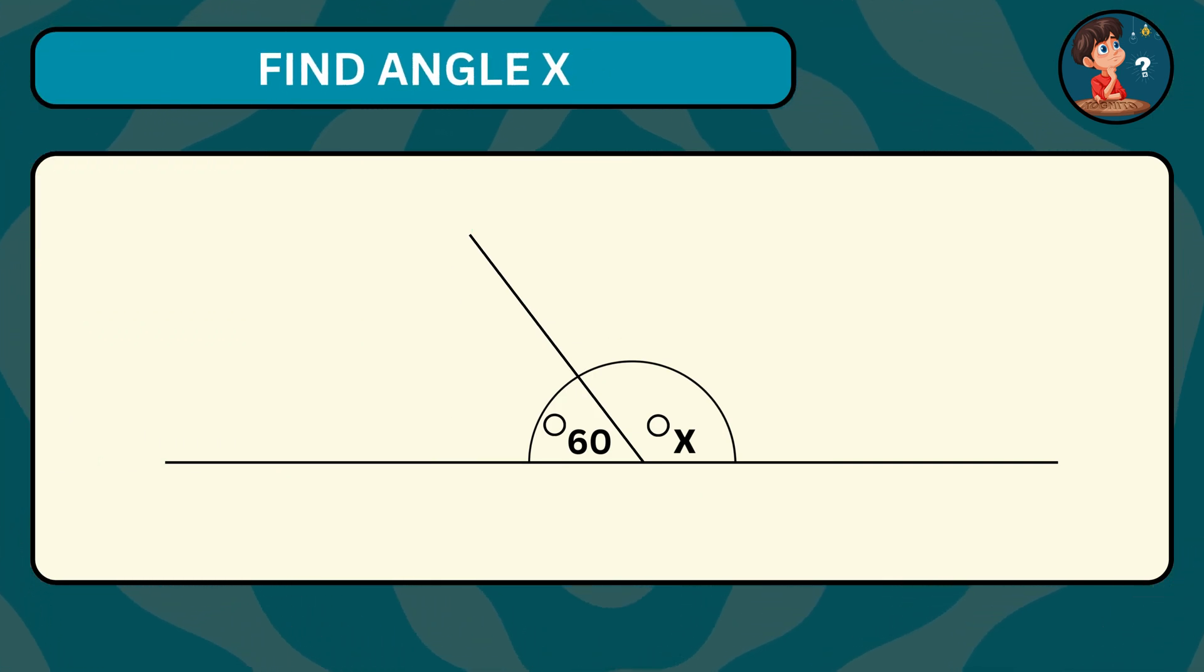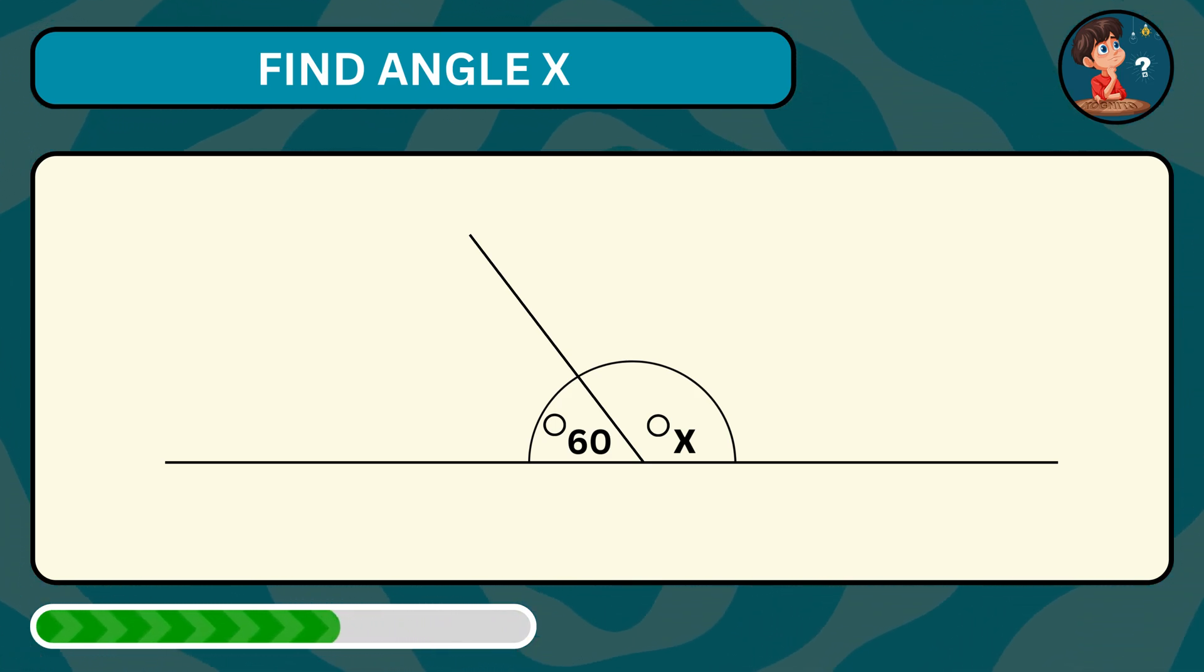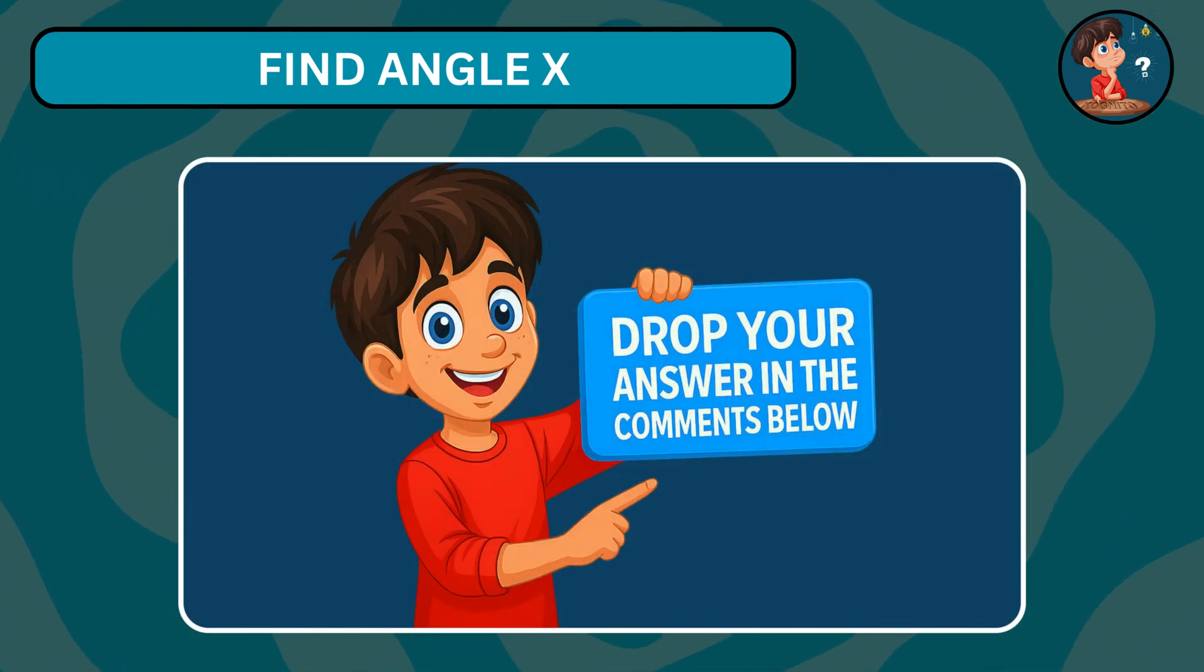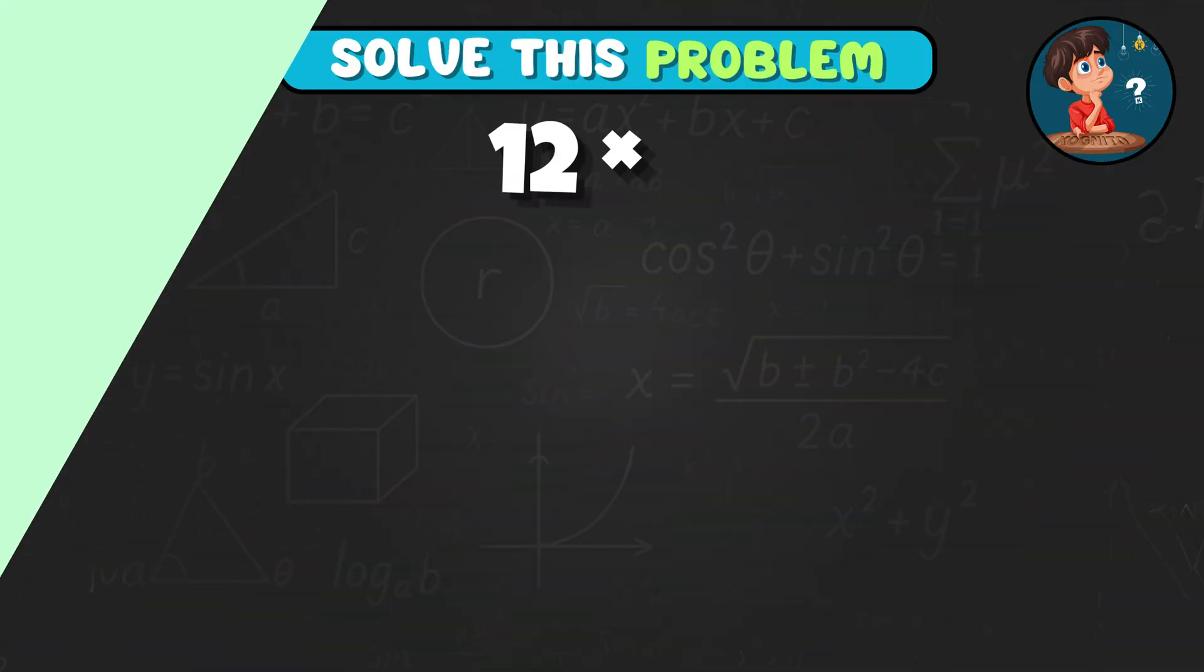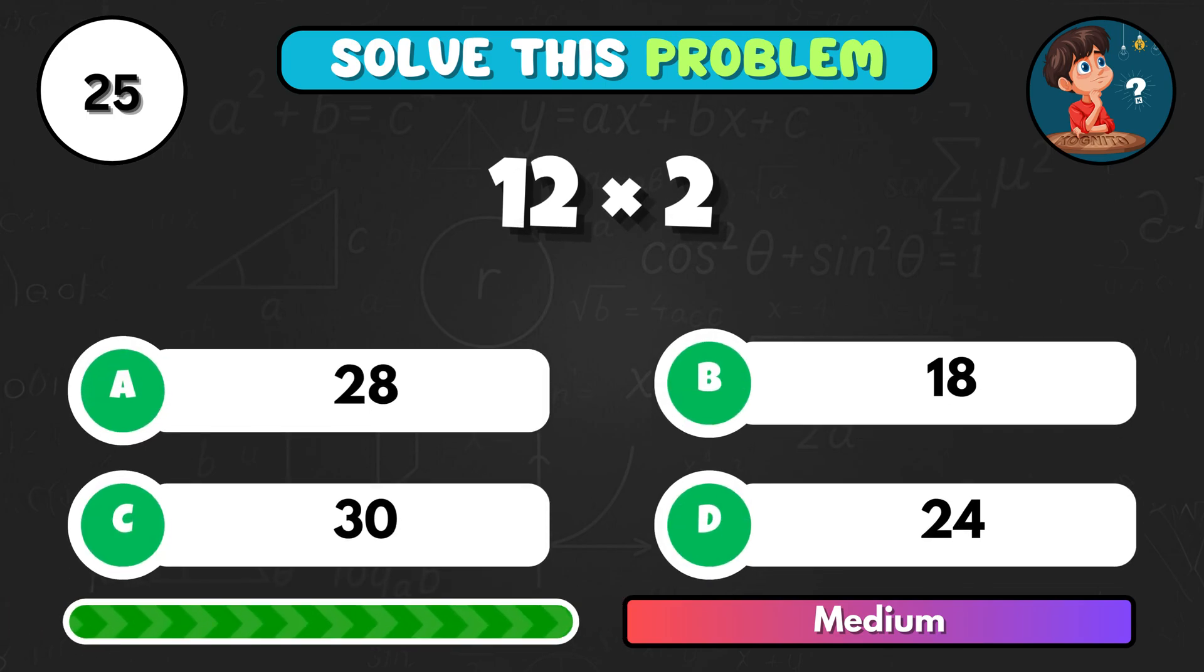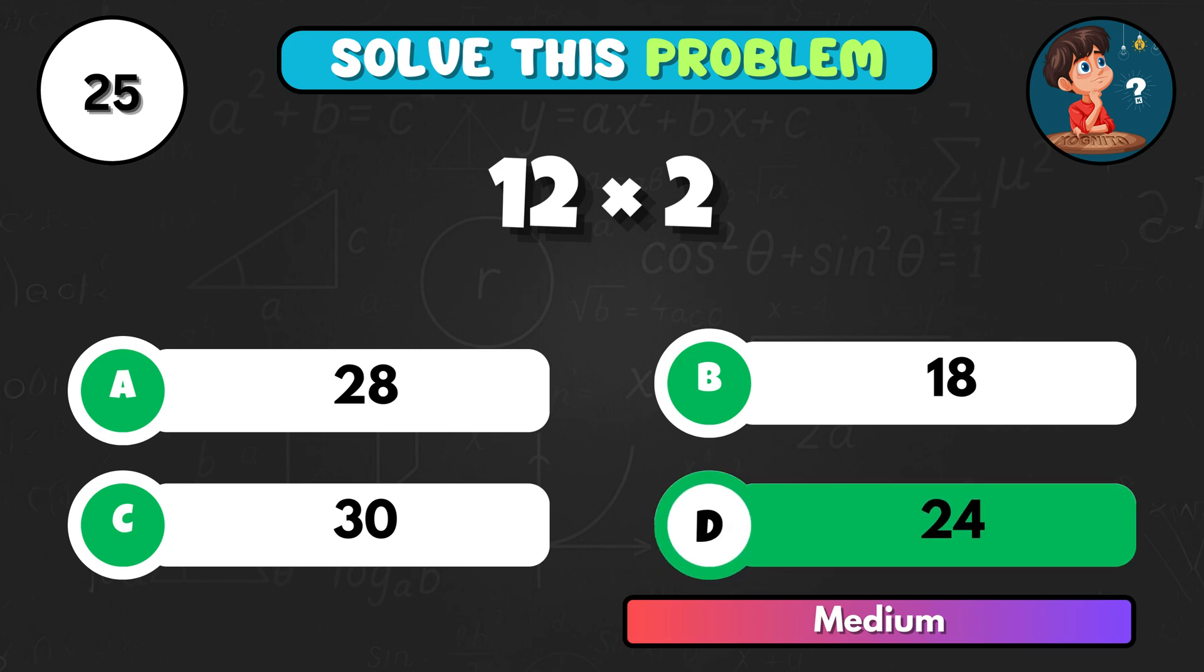Using the rule for angles on a straight line, can you work out the missing angle X? Share your answer in the comments. Solve this one. 12 times 2. Easy, right? It equals D, 24.